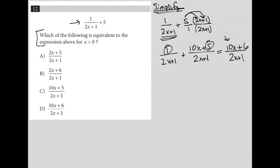Basically, we've already found it. So we simplified our original, and what we end up with is 10x plus 6 over 2x plus 1, and that solution is choice D.